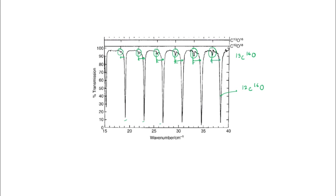If we closely look, we see that the isotopic peak moves away from the main peak as the value of J increases. So now we will look into the effect of isotopic substitution on a rotational spectrum.